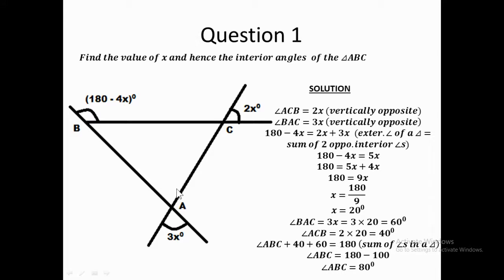So triangle ABC now has two known interior angles: angle ACB = 2x and angle BAC = 3x. The exterior angle at B, which is 180 minus 4x, is the angle outside the triangle. By the exterior angle theorem, this exterior angle equals the sum of the two opposite interior angles: 180 minus 4x equals 2x plus 3x.